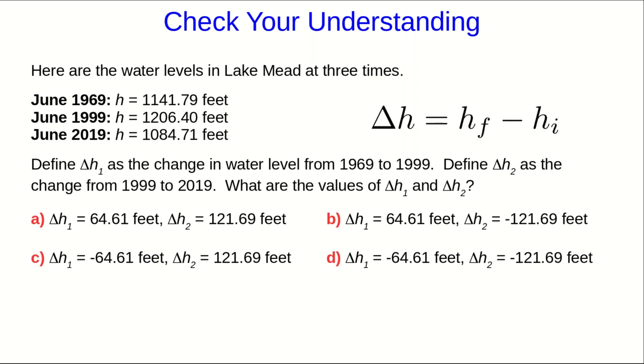If you've understood the definition of change and how we calculate it, you'll know that if the quantity increases, as it does from 1969 to 1999, that's a positive change, and if it decreases, as it does from 1999 to 2019, that's a negative change, and so the answer must be B.